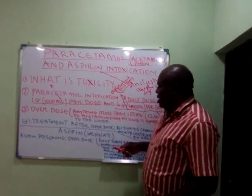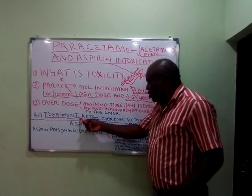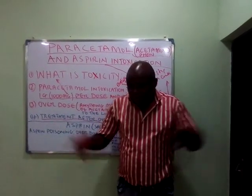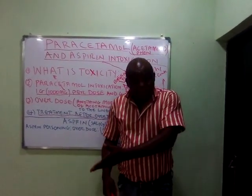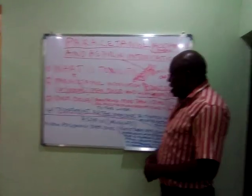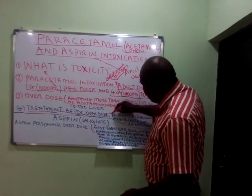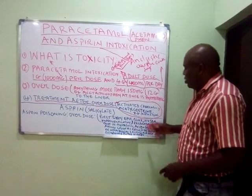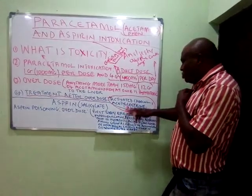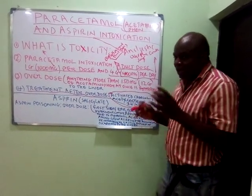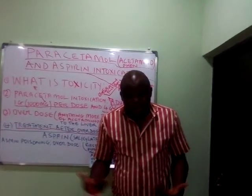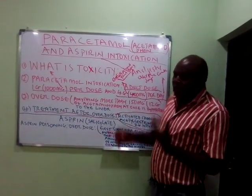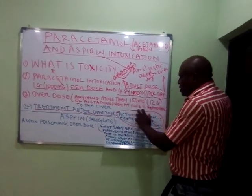If somebody — an adult — takes an overdose and has fainted and is about to die, what do you do? First, call an ambulance and let people know the person has taken an overdose of the drug. When the doctor arrives, the next thing they do is give the person activated charcoal immediately. They also give acetylcysteine — about 2 grams — by intravenous infusion. The doctor gives acetylcysteine 2 grams IV infusion, and it can be increased up to 4 grams. This is the antidote for paracetamol intoxication, and activated charcoal is also an antidote.